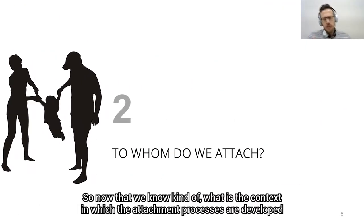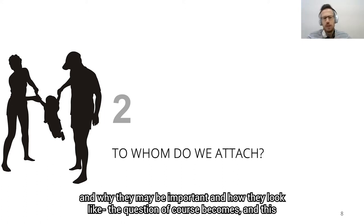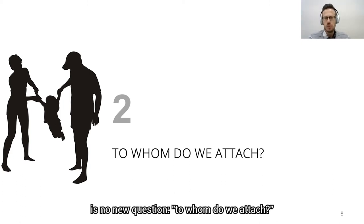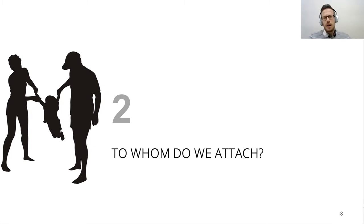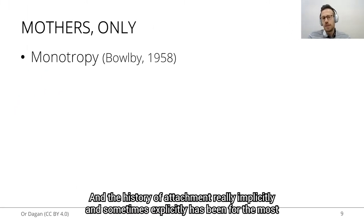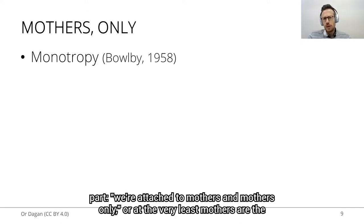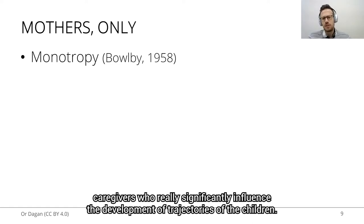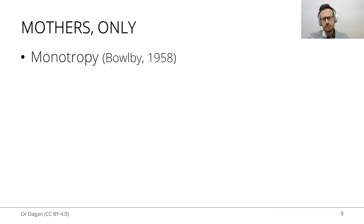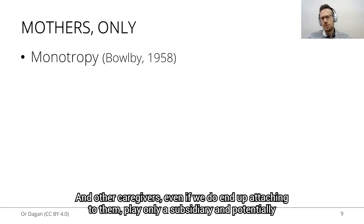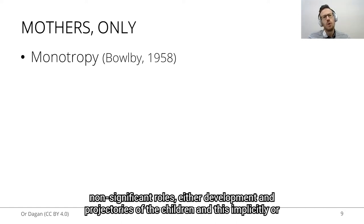Now that we know what the context is in which attachment processes are developed and why they may be important, the question of course becomes — and this is no new question — to whom do we attach? The history of attachment really, implicitly and sometimes explicitly, has been for the most part that we attach to mothers and mothers only, or at the very least, mothers are the caregivers who really significantly influence the developmental trajectories of children. Other caregivers, even if we do end up attaching to them, play only a subsidiary and potentially non-significant role.